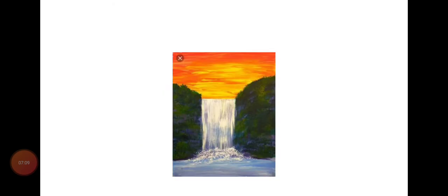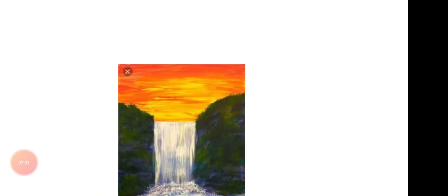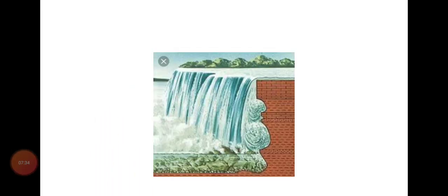Our next landform is a very beautiful one — the waterfall. Have you ever painted a waterfall? A waterfall is a place where the flow of a river drops from a great height. The most famous waterfall is Victoria Falls in Africa — it is a very beautiful scene. Look at this picture of another waterfall — it is a very beautiful and attractive landform.